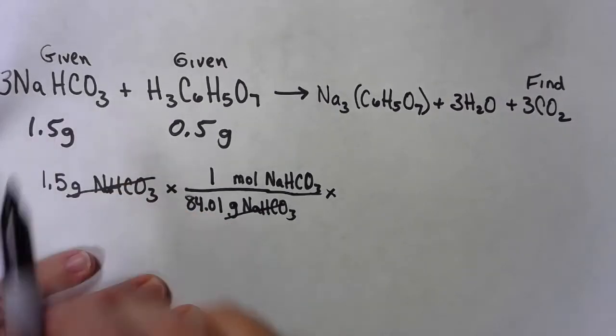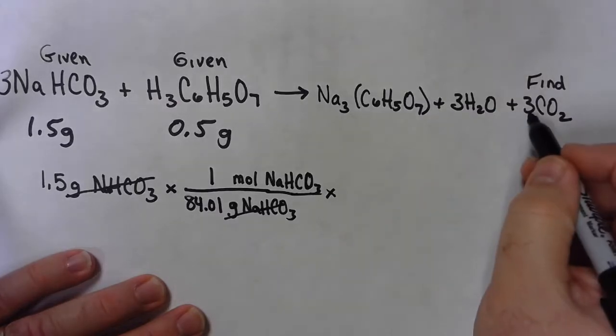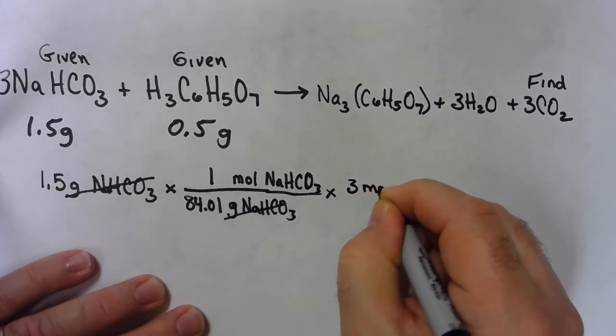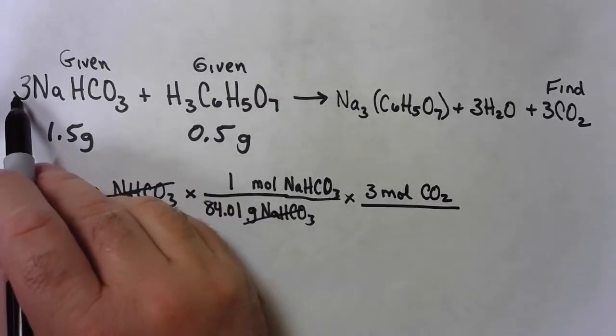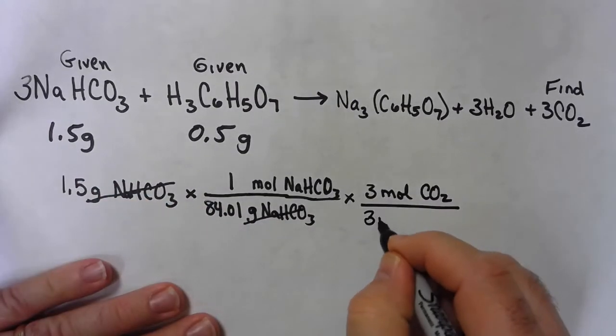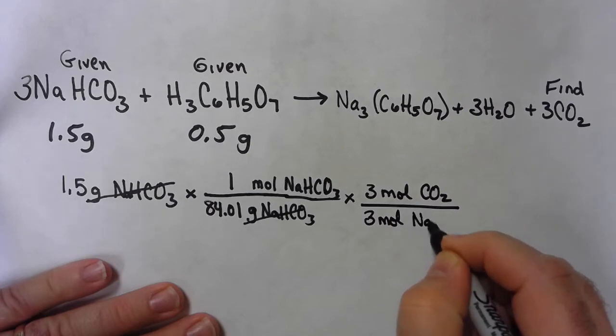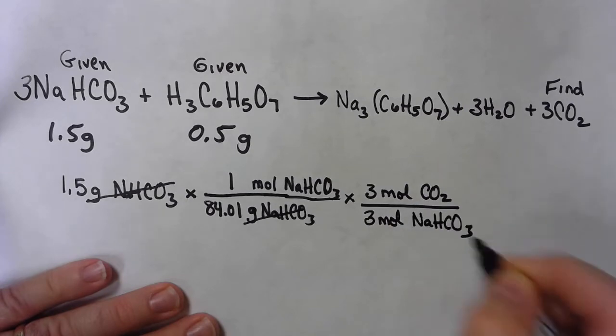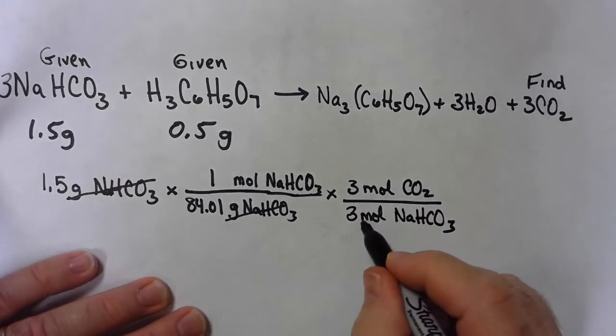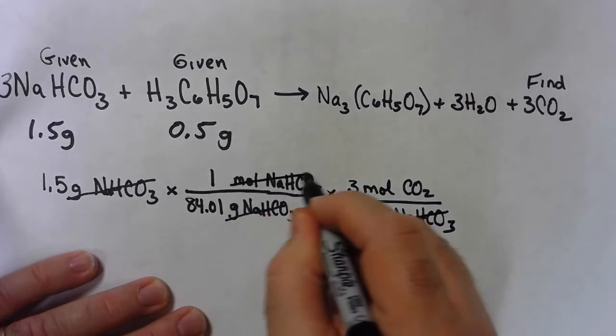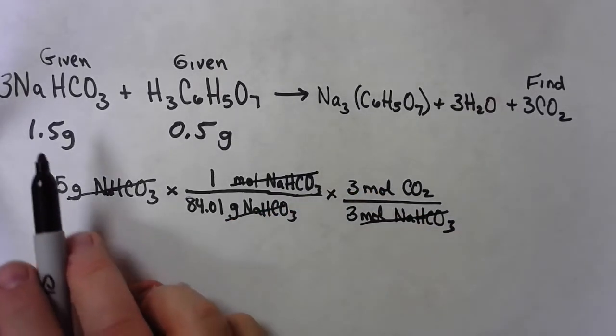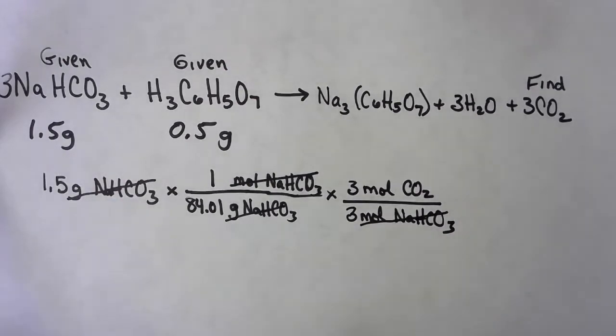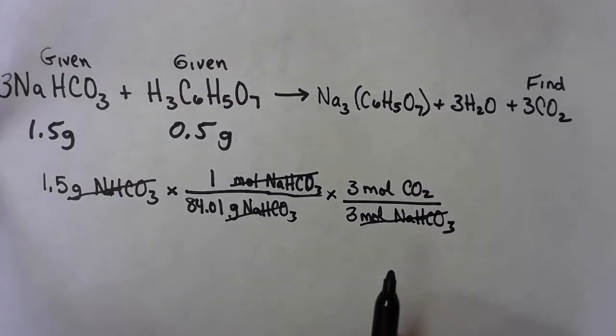So it's three moles CO2 and three moles bicarbonate. Now the moles of sodium bicarbonate cancel. And what we've done at this point is we have turned my 1.5 grams of sodium bicarbonate into moles of CO2.